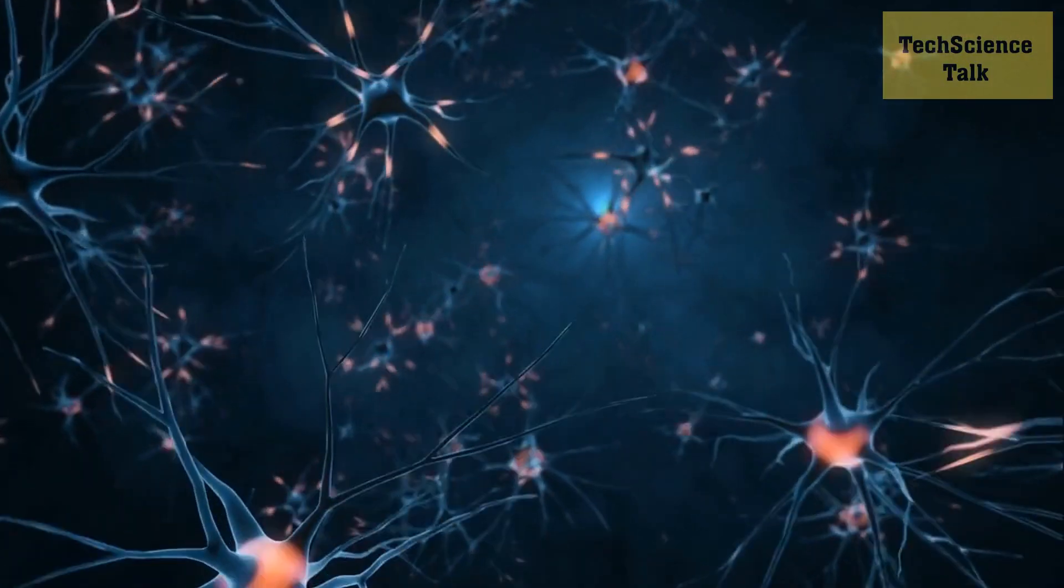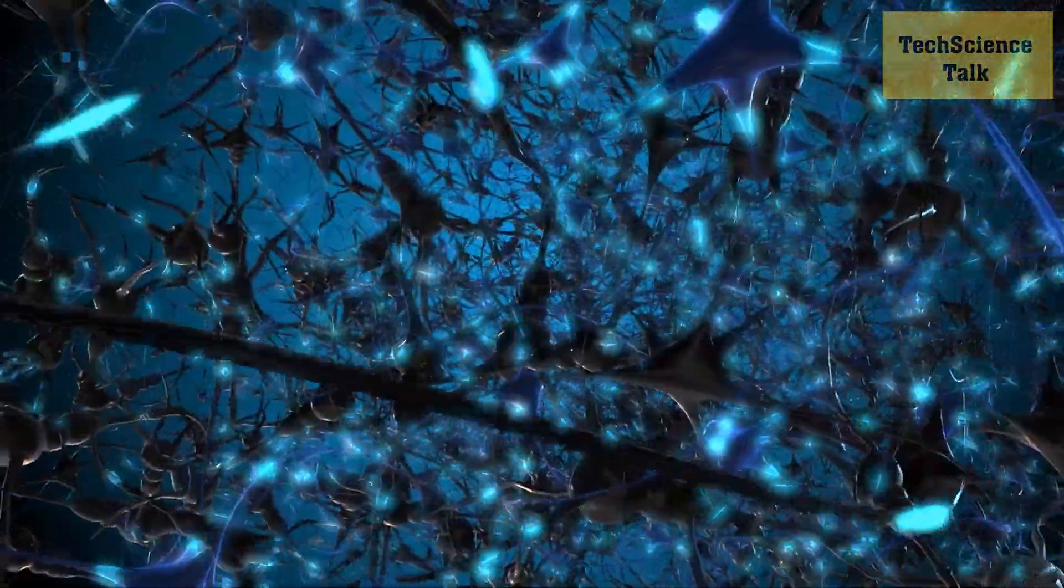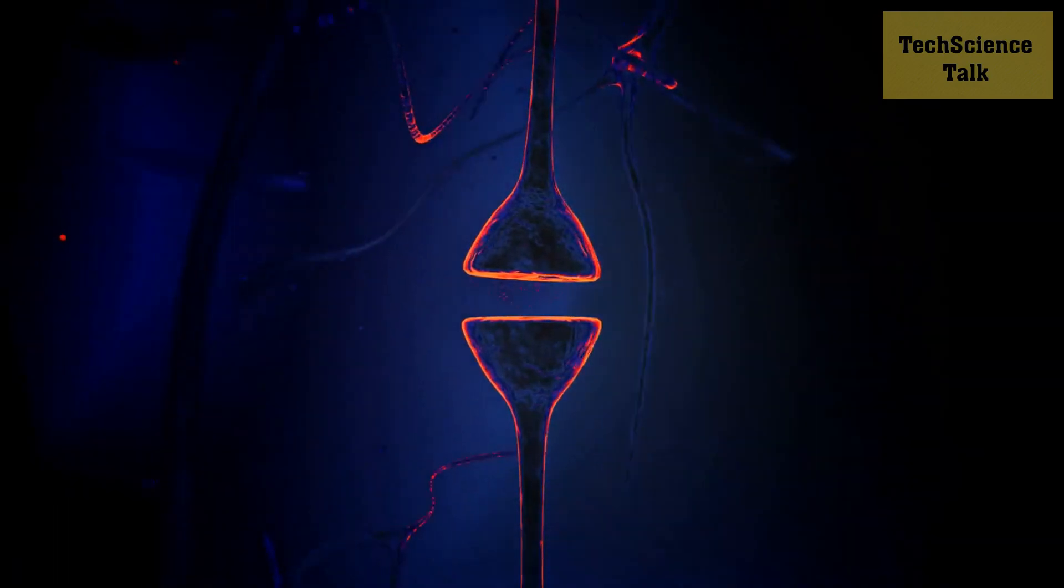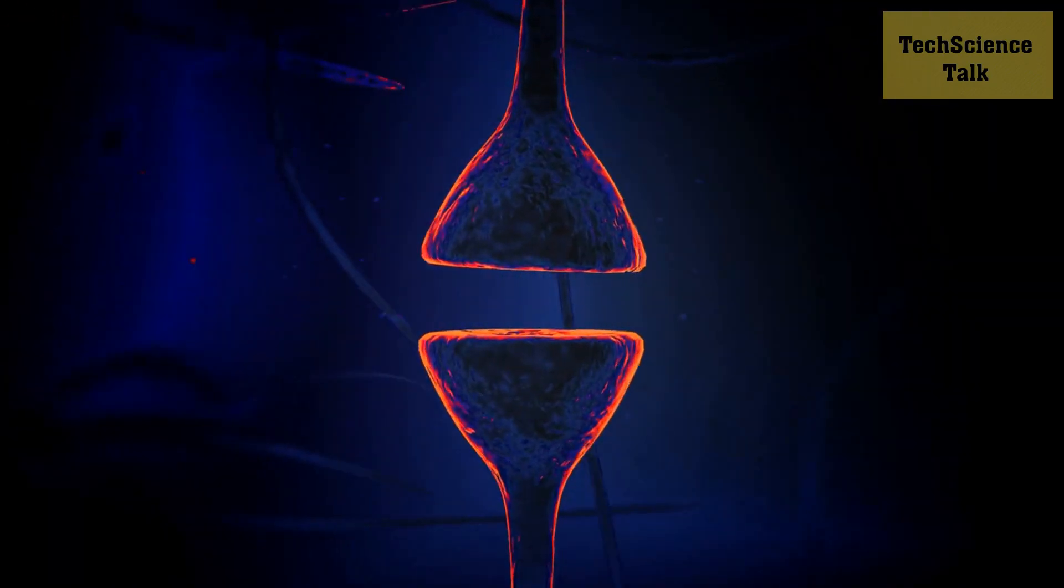The brain also undergoes changes with age. The volume of the brain decreases, and the connections between neurons become less efficient. This can lead to a decline in cognitive function, including memory, attention, and processing speed.